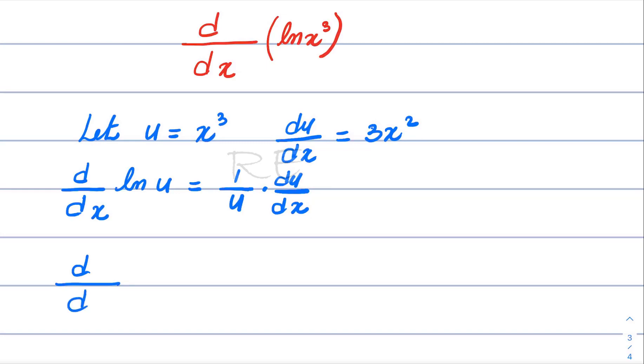the derivative of ln(x³) will be 1 over u, which is x³, so 1 over x³, times du/dx, which is 3x².